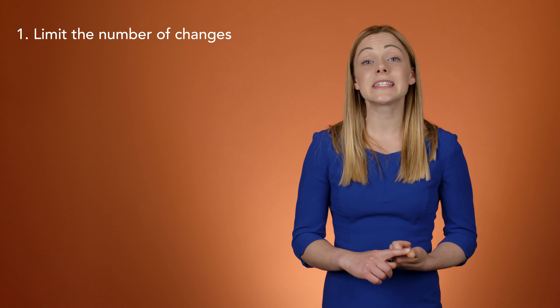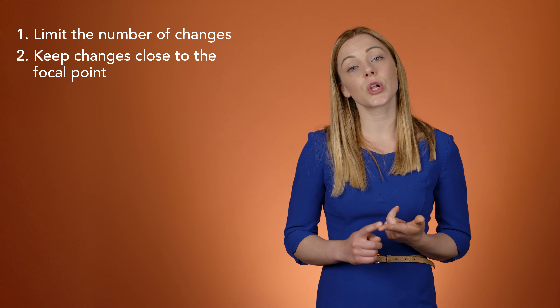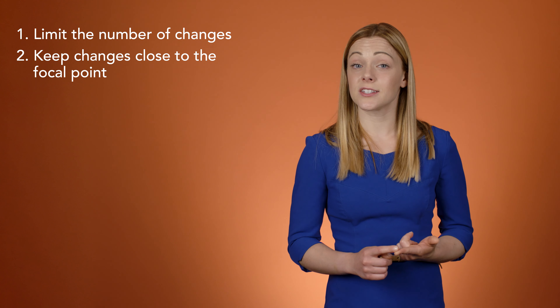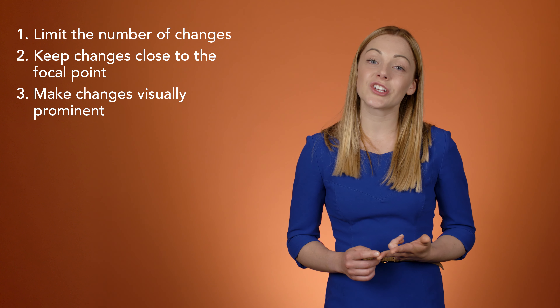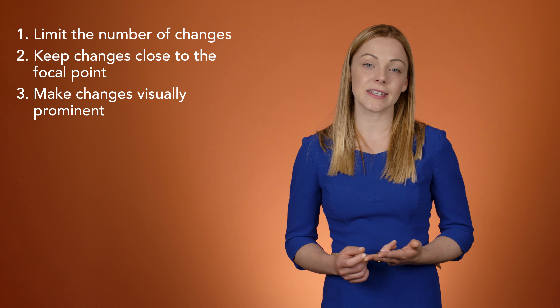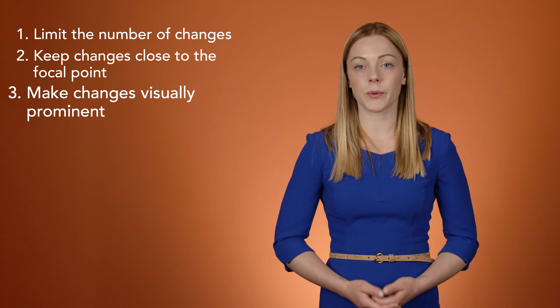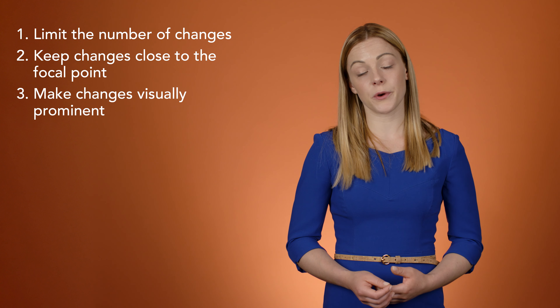You can reduce the effects of change blindness in several ways. First, by limiting the number of changes that occur at once. Second, keep those changes close to the user's focal point so the change is easier to notice. Third, make use of animation, dimming, or strong visual indicators to make changed elements on that interface more noticeable, especially if the change is far from the user's original focal point.